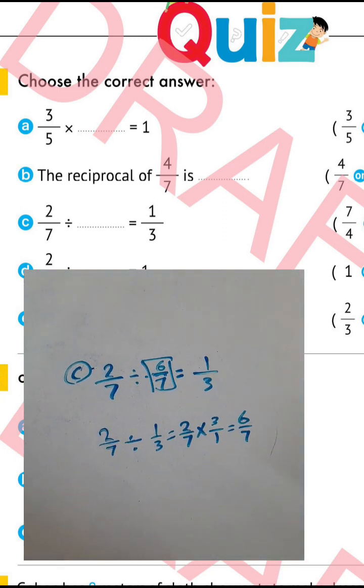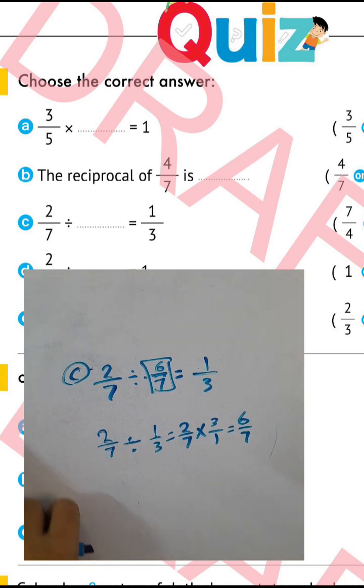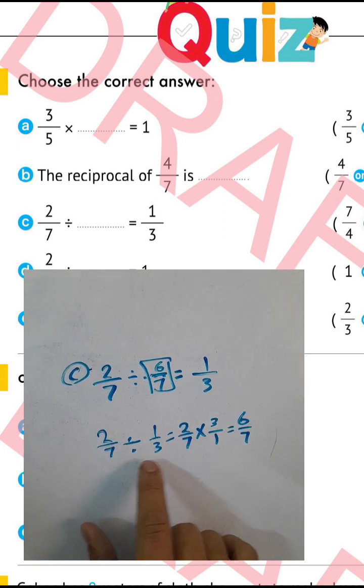Write the inverse of one third, which is three over one.